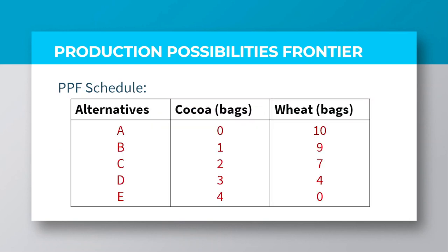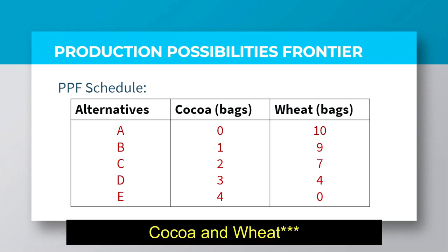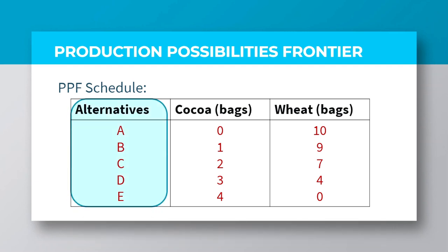Let us look at a typical hypothetical data of production alternatives or production possibilities of a country. A country produces only two commodities, cocoa and maize, measured in bags. The first column represents the production possibilities or alternatives of the country ranging from A to E. The other two columns are the quantity of both commodities produced at each alternative.